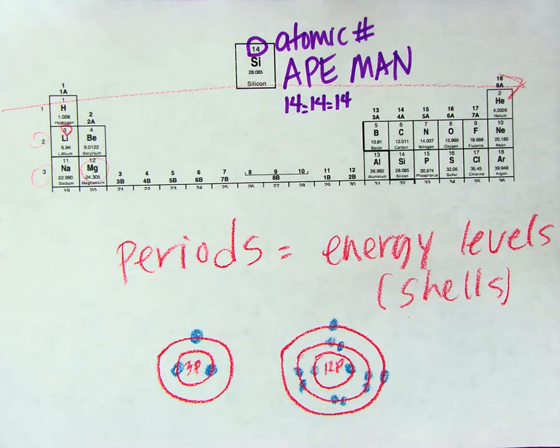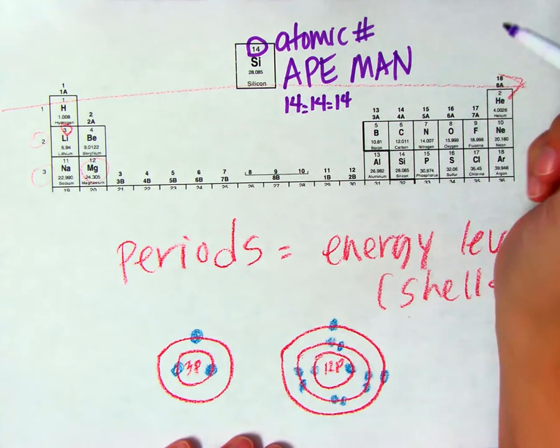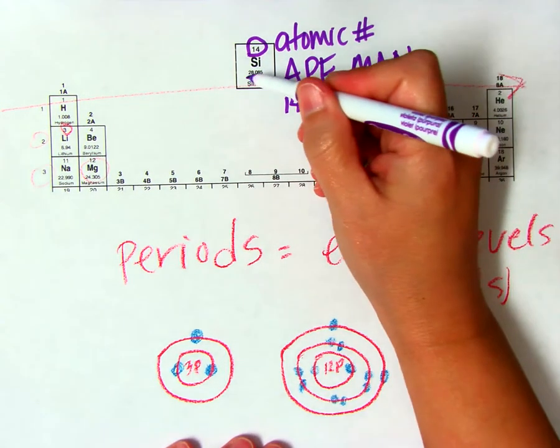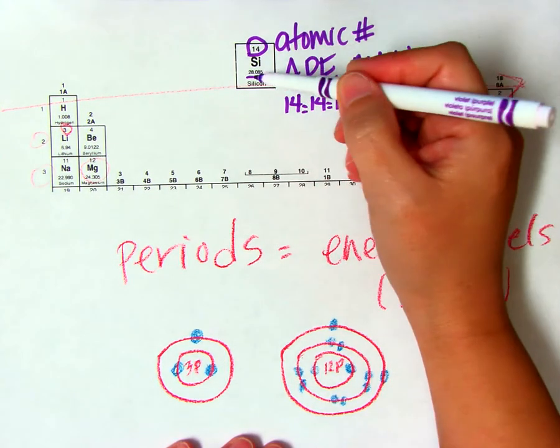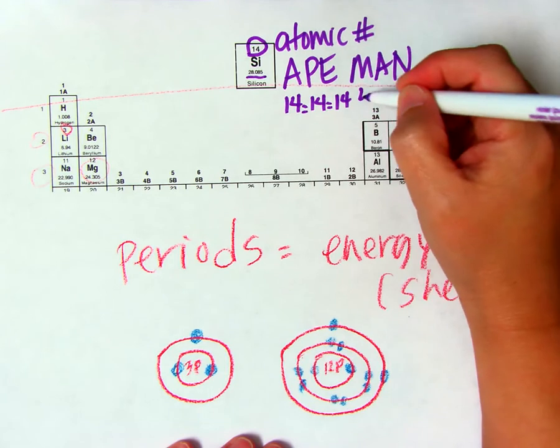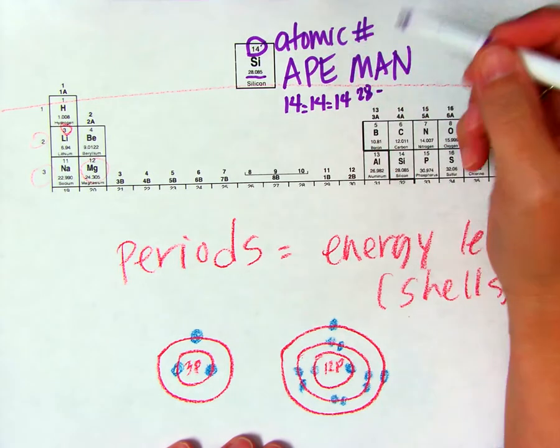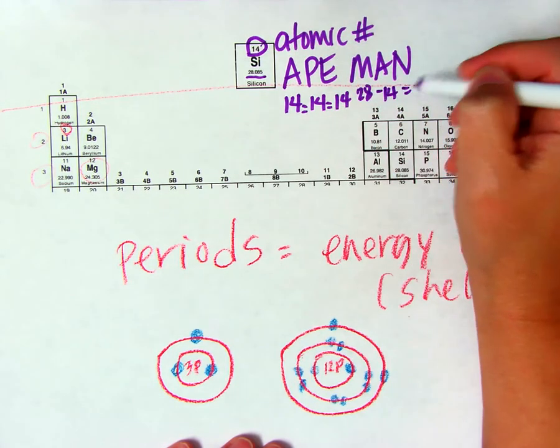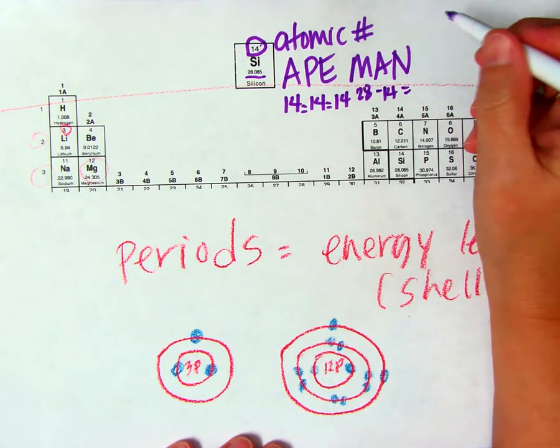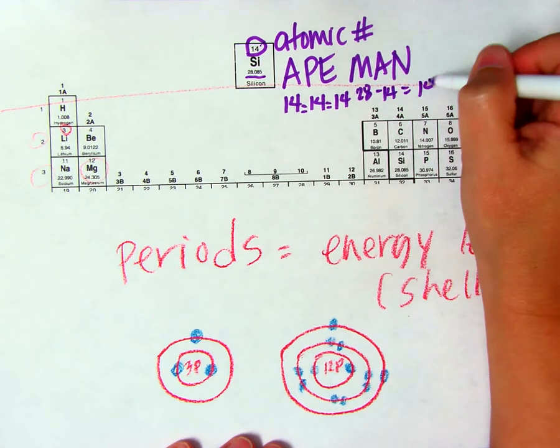So, that would be twenty-eight. Mass is this bottom number. That would be the atomic mass minus the atomic number, and that gives us how many neutrons there should be. So, that would be fourteen.